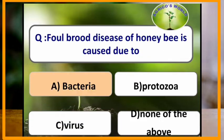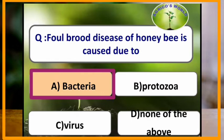Foul brood disease of honeybee is caused due to which organism? Foul brood disease of honeybee is caused due to bacteria.